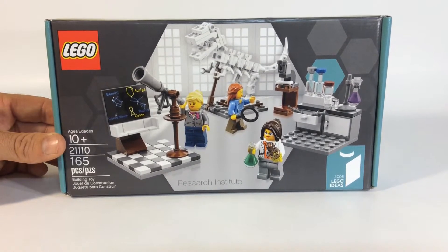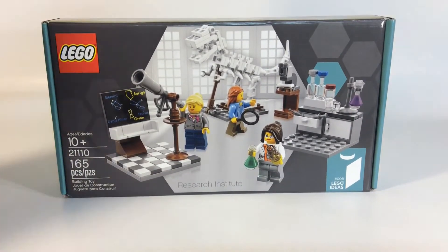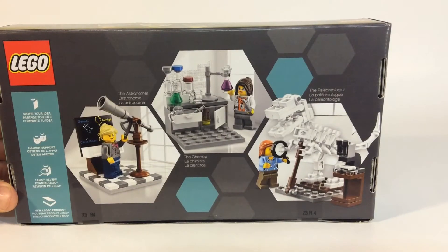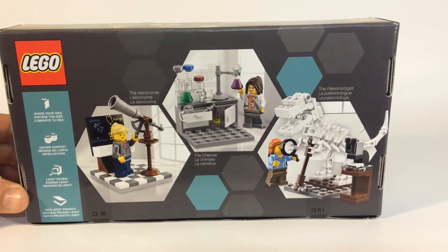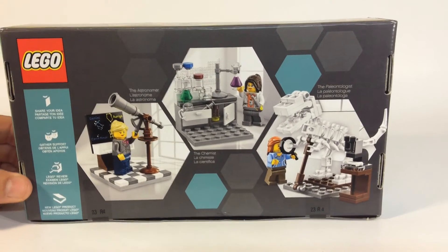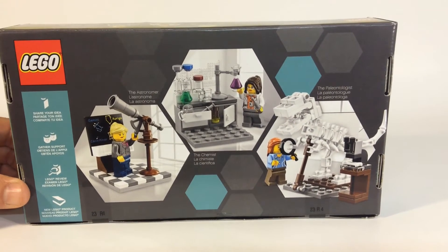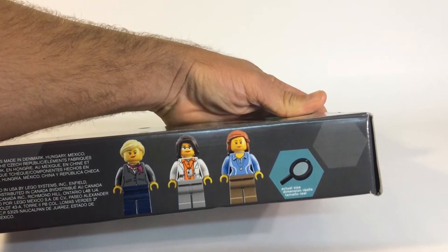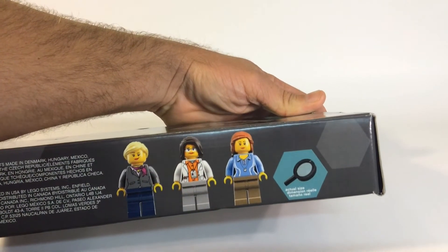Let's go ahead and take a look at the box here. You see the three different scenes we get with this, three different female minifigs and their different professions. You get a nice little box showing the three minifigs. We do have new printing on that one torso there.